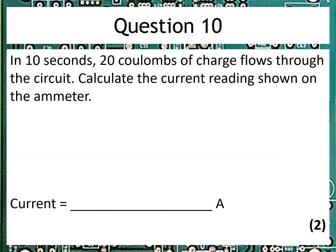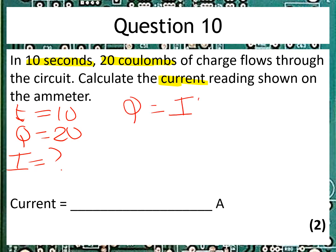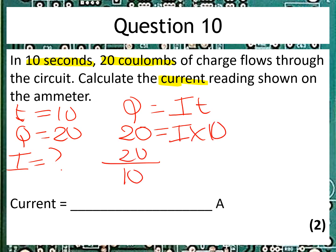After the last question, this is refreshingly easy. We've got a time period of 10 seconds and 20 Coulombs of charge, and we're asked to calculate the current. So T equals 10, Q equals 20, straight into Q equals IT: 20 equals I multiplied by 10, so I equals 2 amps. Units are already there.